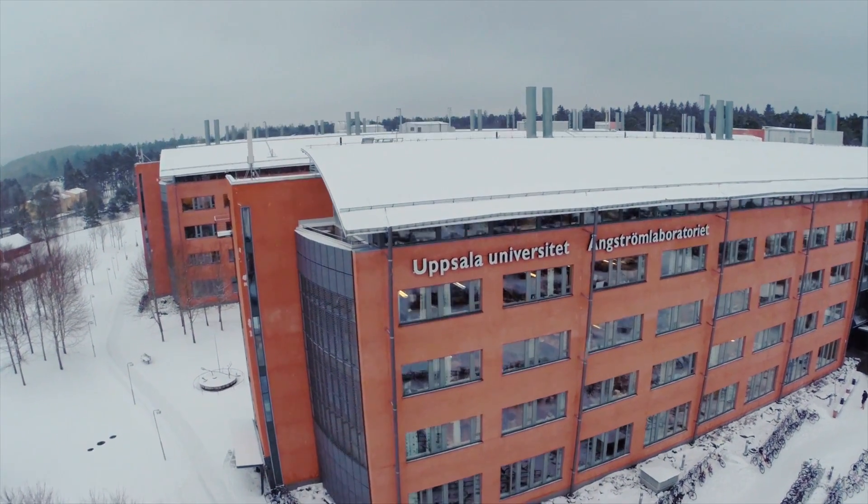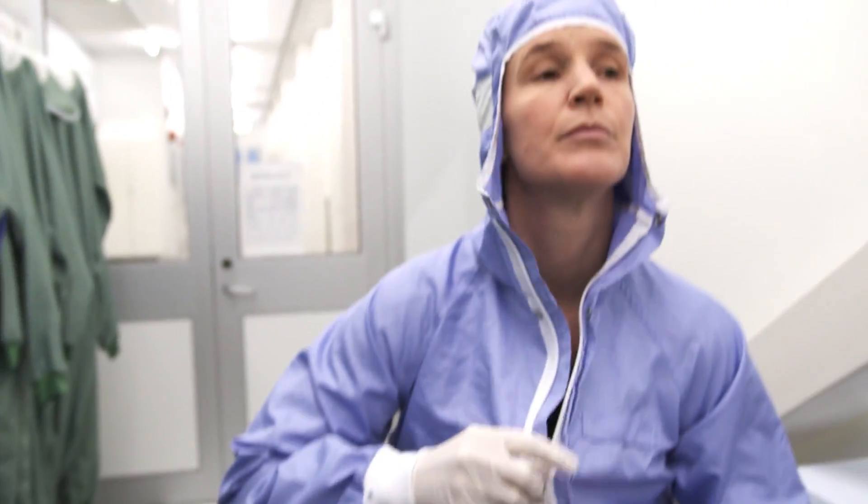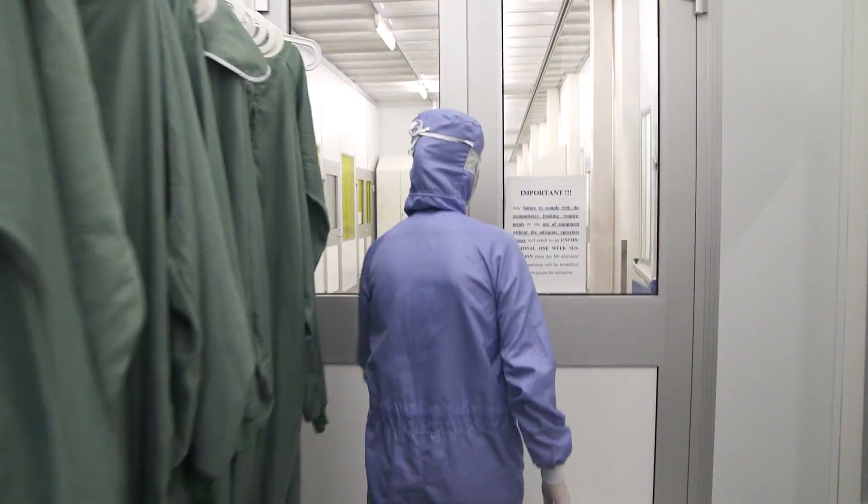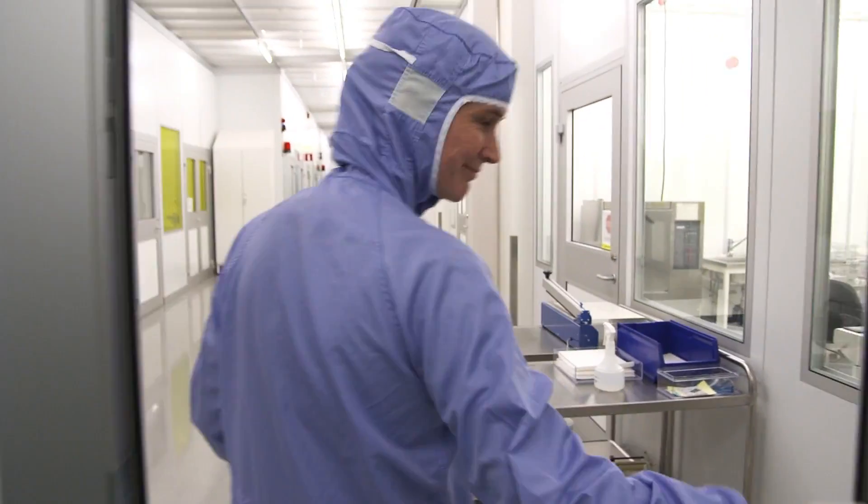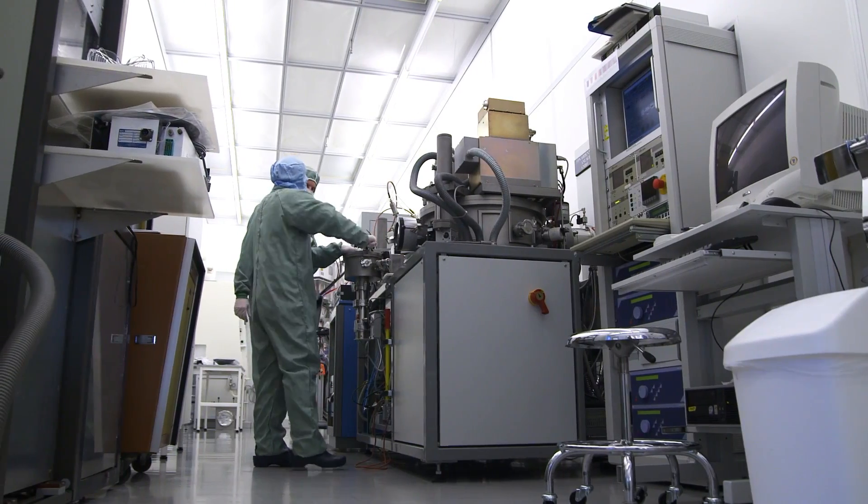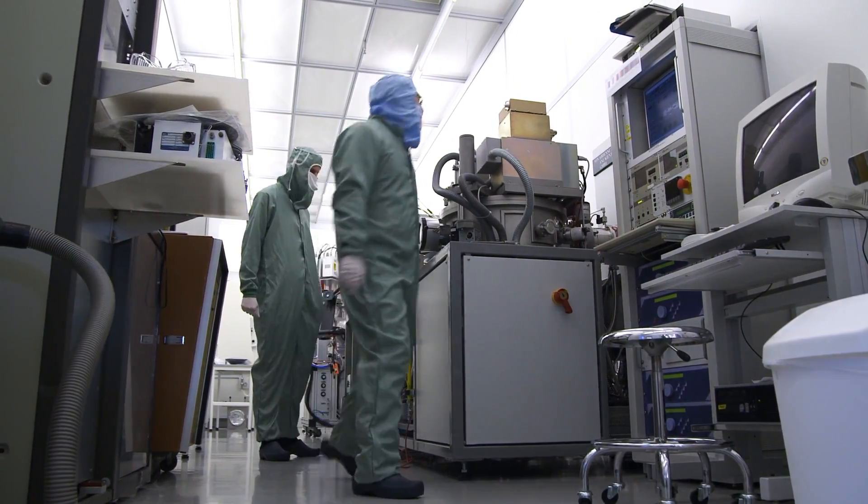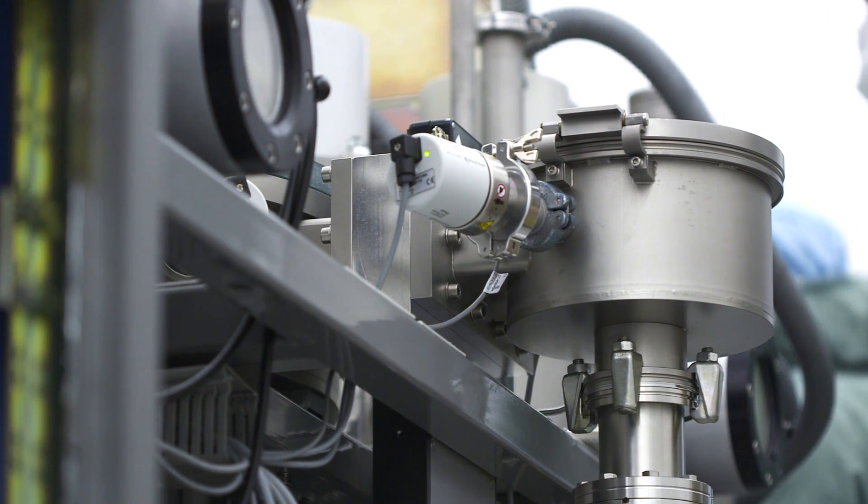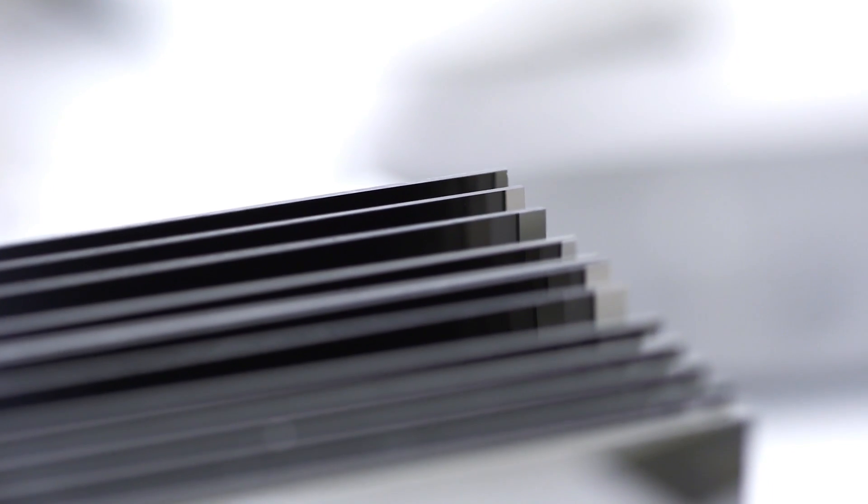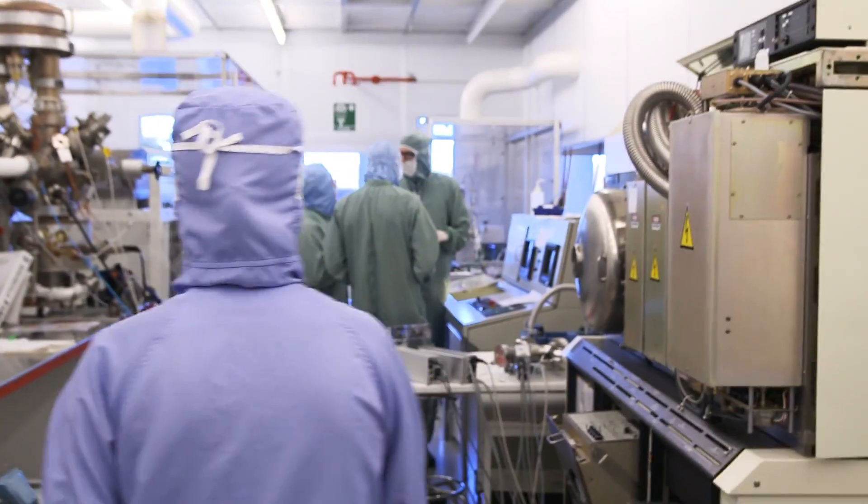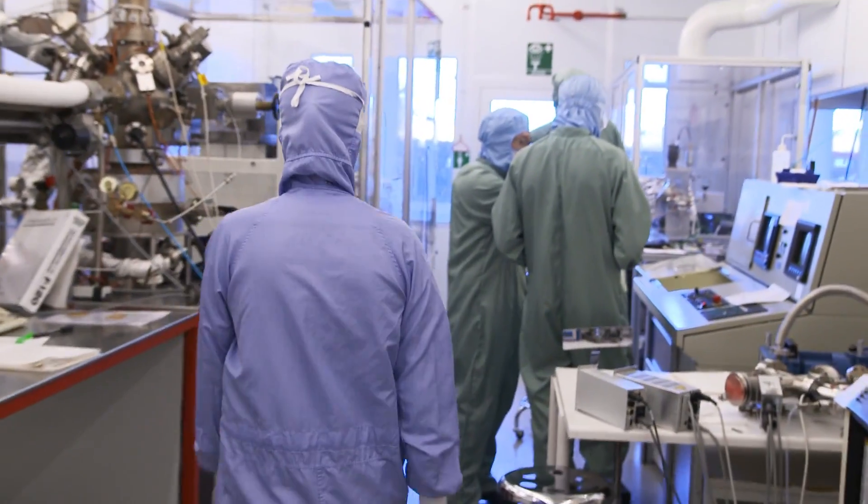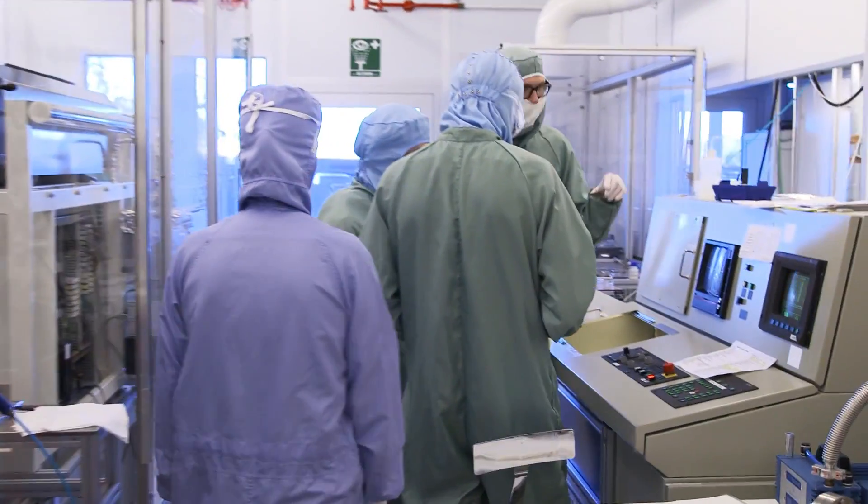Today Charlotte Platzer Bjorkman is one of the lead scientists at the Ångström Solar Center at Uppsala University. In the clean room, free from as much dust as possible, Charlotte and her colleagues manufacture new forms of super thin solar cells, called thin film solar cells. She leads a group of five students and three faculty members who work in the lab daily.